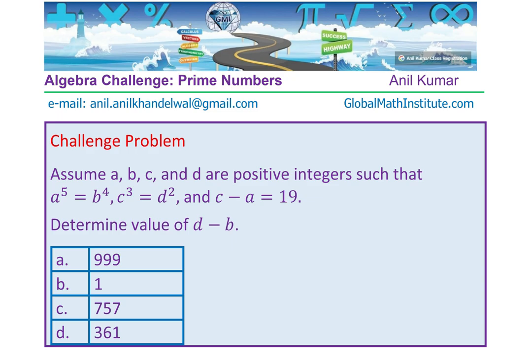Determine value of D minus B. Four options are given to you: 999, 1, 757, and 361.